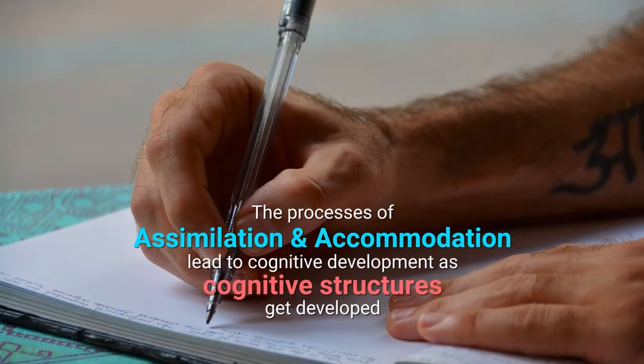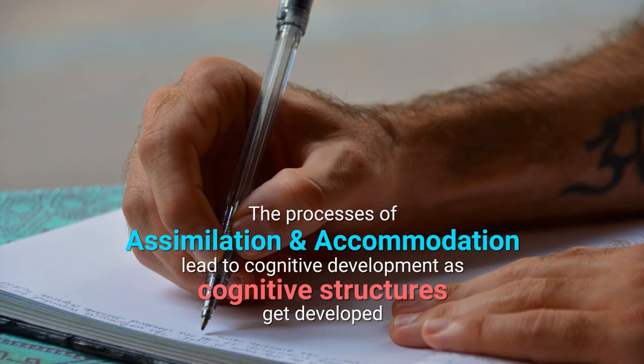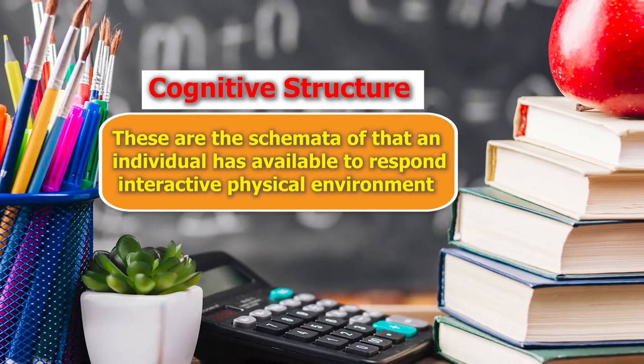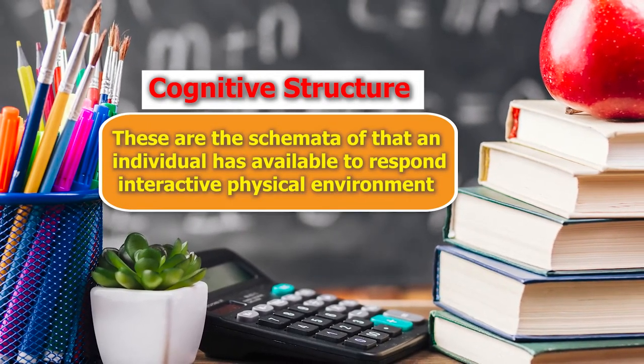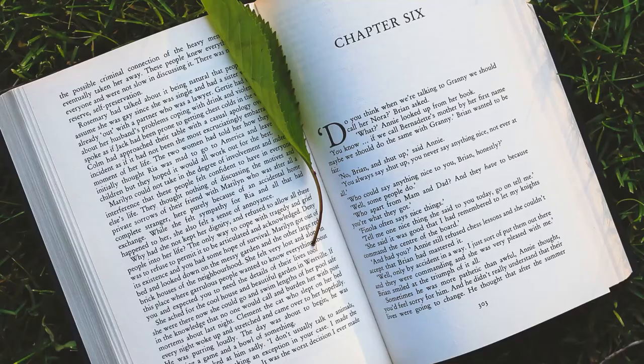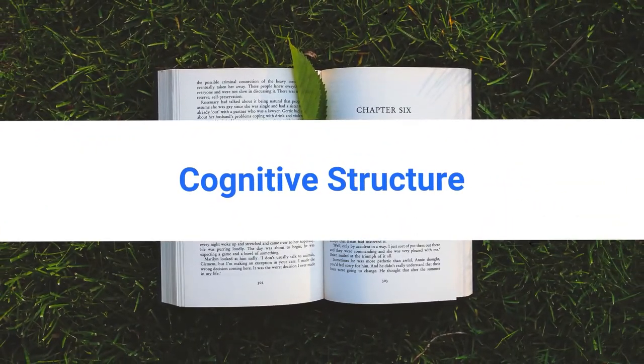Cognition comprises the processes of assimilation and accommodation, and they lead to cognitive development as cognitive structures get developed over time. In this domain, information processing theory and Piaget's theory of cognitive development laid a powerful foundation for Cognitivism. For an individual to grow, there must be an optimum cognitive apparatus with a certain degree of maturation. When this combination of cognitive apparatus and maturation takes place, we say the cognitive development of the individual occurs, leading to certain cognitive structures — the schemata.